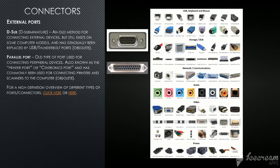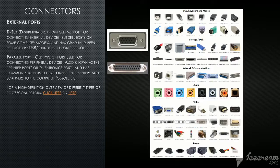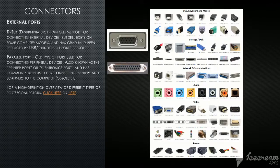The D-Sub port, or D-Sub miniature port, is an old method for connecting external devices that still exists on some computer models and has gradually been replaced by USB and Thunderbolt ports. Parallel ports, which we already discussed, are an old type used for connecting peripheral devices, also known as the printer port or Centronics port, commonly used for connecting printers and scanners to the computer. For a high-definition overview of different types of ports and connectors, please see the link in the description.